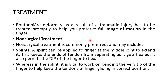Boutonnière deformity as a result of traumatic injury has to be treated promptly to preserve full range of motion in the finger. Non-surgical treatment is commonly preferred and may include splints. A splint can be applied to the finger at the middle joint to extend it, keeping the ends of the tendon from separating as it heals. It also permits the distal interphalangeal joint to flex. While in the splint, it is vital to work on bending the very tip of the finger to help keep the tendon gliding in the correct position.